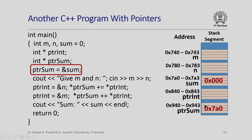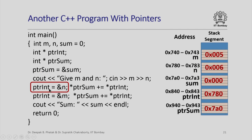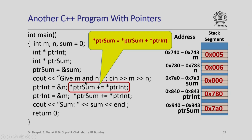So pointersum holds 0x7A0. We read in m=5 and n=6, stored in their respective memory locations. Executing 'pointerint = &n' stores 0x780 in pointerint. Now we execute the compound assignment 'star pointersum += star pointerint', which expands to 'star pointersum = star pointersum + star pointerint'. This means: find the content at the address given by pointersum, add the content at the address given by pointerint, and store the result back.